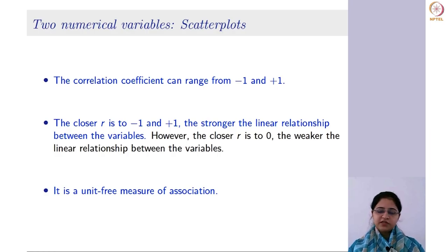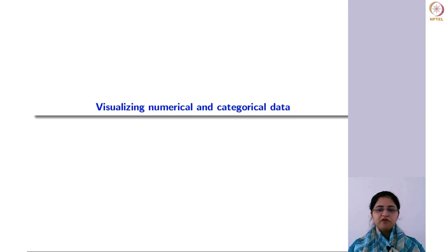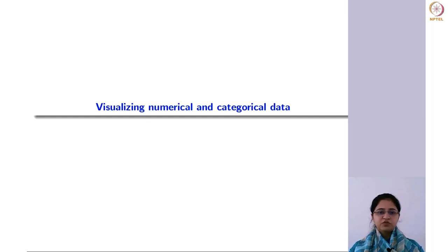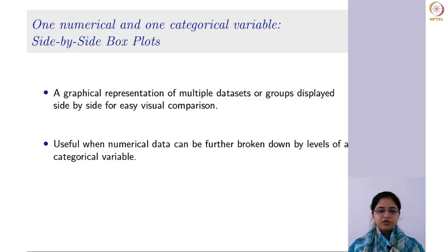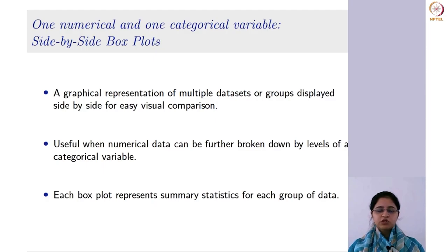This was about two numerical variables. Now, if a numerical variable can be broken down into different categories, you can use the side-by-side box plot. Suppose you have ages of individuals categorized as male or female — you can draw two different box plots and compare them. Side-by-side box plots are used for easy visual comparison between multiple datasets or categories.